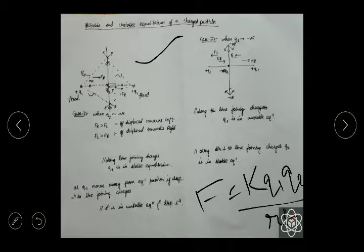Along the line it is unstable equilibrium. However, along the direction perpendicular to the line joining the charges, Q2 is in stable equilibrium because if we shift it perpendicularly, both charges will attract it and the resultant force will be directed towards the equilibrium position.